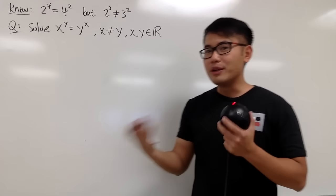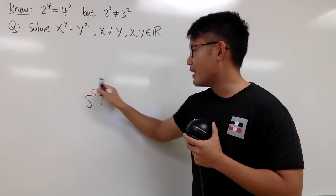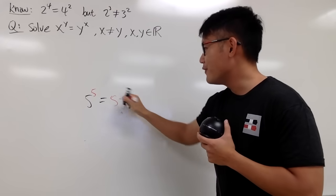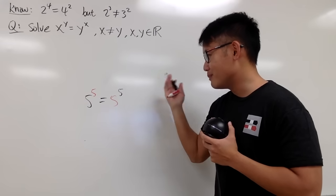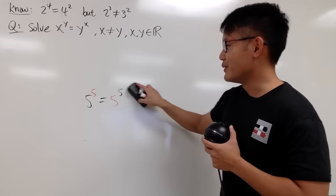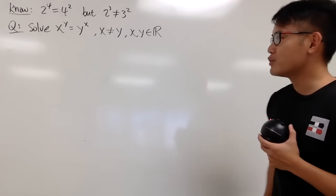Because if they were equal to each other, it's obvious. For example, when we have 5 for the base and 5 for the exponent, of course, this is the same as 5 for the base in red and then 5 for the exponent in black. So let's not worry about these kind of situations. That's why I have x is not equal to y to make the solution more interesting.